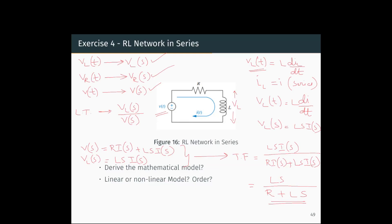Since this is a series network, both the current through the resistor and the current through the inductor are the same, so I = I_L. V_L is equal to L × dI/dt. When we take the Laplace of V_L(t) we get V_L(s) = L·s·I(s). The input voltage V(s) is equal to the voltage across the resistor plus the voltage across the inductor, so R·I(s) + L·s·I(s).